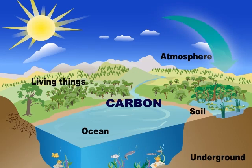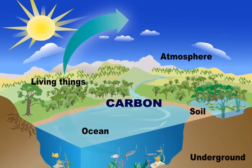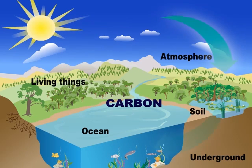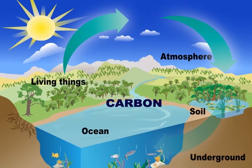Carbon doesn't stay in one place or in one form. Instead, it moves around between different parts of the Earth. This process is called the carbon cycle.